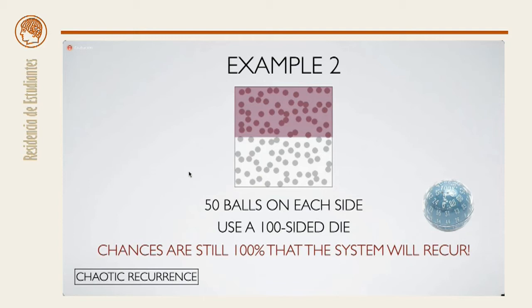Now, I have a hundred-sided die. What are the odds that I will return? So, if you think about it, this isn't really that much different than the two-sided situation. It's just that it could take a lot more time for the recurrence to happen. So, the chances are actually still 100% that the system will recur. This is a highly chaotic recurrence system.